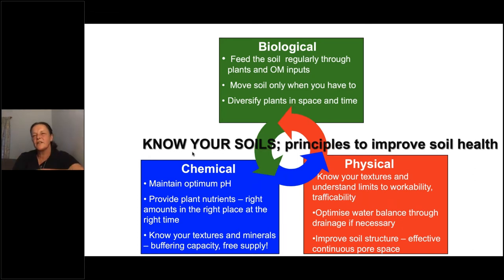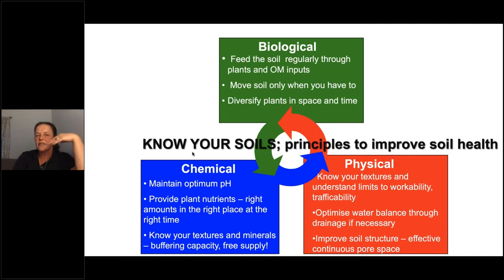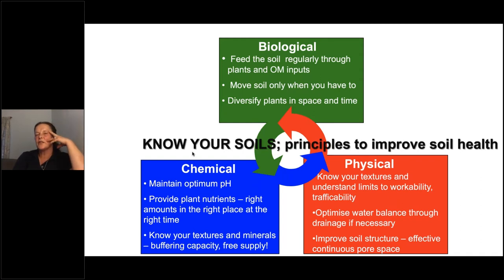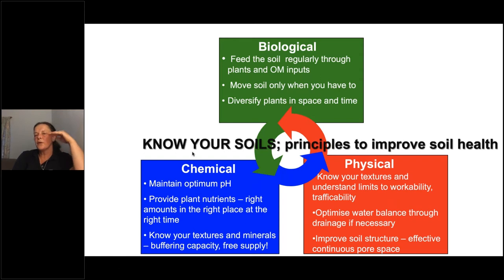Improving soil structure works with that, and it's something farmers have a lot of control over — making sure the pore space in soil is effective and continuous. If we get the chemistry and physics right, so plants grow well, we will be feeding the soil regularly through our grass, our clovers and our herbal leys if we're growing something more diverse. The diversity of root systems from a herbal lay or a grass-clover lay is important, and we see the benefits of that diversity below ground. In grassland systems, very intensive tillage is relatively rare, usually only associated with a reseed. The guiding principle isn't that we shouldn't move soil, but that we should move it only when we have to.